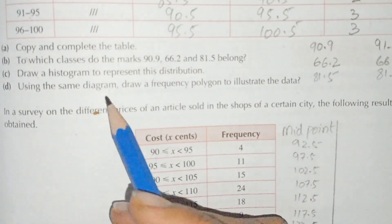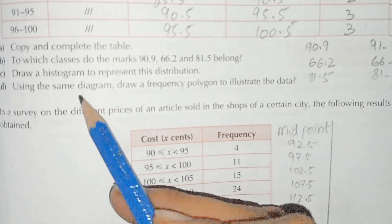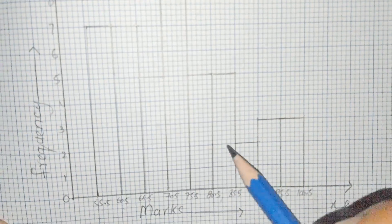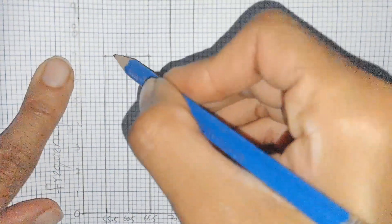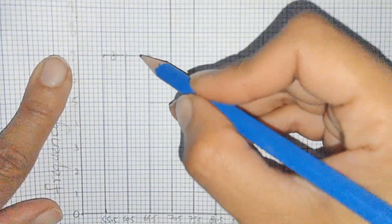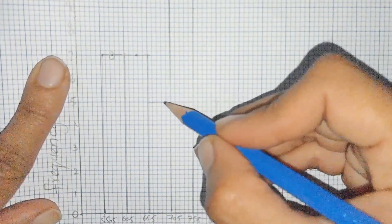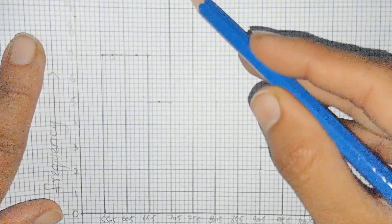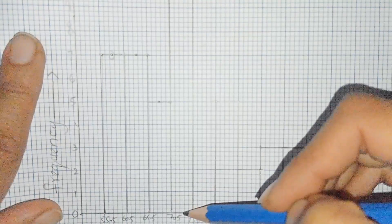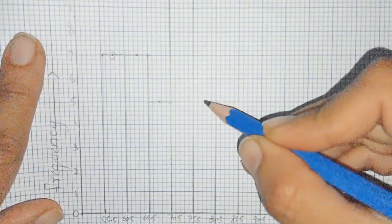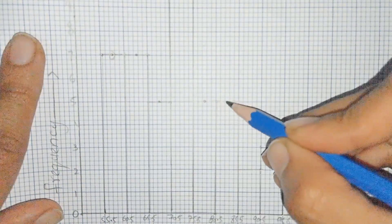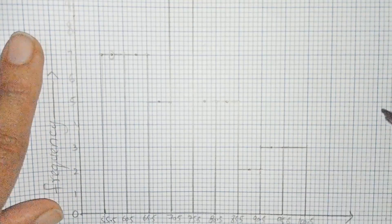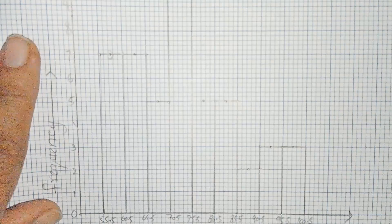We draw the frequency polygon on the same histogram diagram. The midpoints are 58, 63, 68, 73, 78, 83, 88, 93, and 98. We mark each midpoint at its corresponding frequency height, then join all the points together to form the frequency polygon.